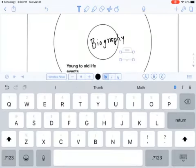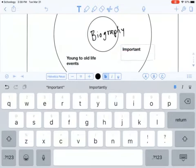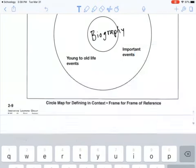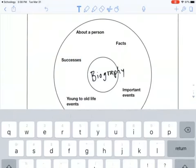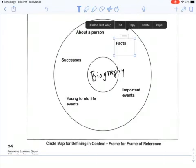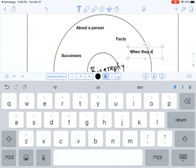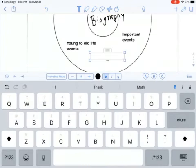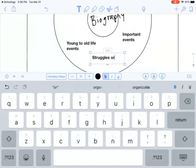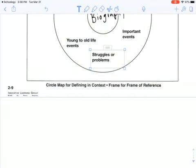Important events. I could add in here successes. I could add in when they died. I know. I have another one. Struggles or problems. Okay. So I have some ideas there.